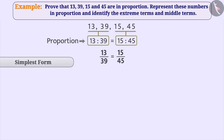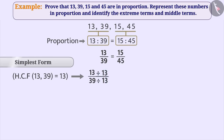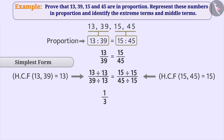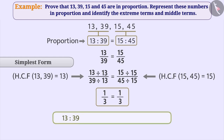In 13 by 39, the HCF of numerator 13 and denominator 39 is 13. If we divide the numerator and denominator of 13 by 39 with the HCF 13, then we get the simplified form of this fraction: 1 by 3. Similarly, the HCF of the numerator and denominator of 15 by 45 is 15. If we divide the numerator and denominator of 15 by 45 with the HCF 15, then we get the simplest form of this fraction: 1 by 3. Since the simplest form of both fractions is equal, we can see that 13 by 39 is equal to 15 by 45, that means 13 is to 39 is equal to 15 is to 45.